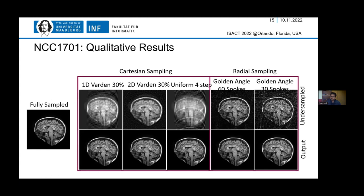Once we trained our model and tried to reconstruct, we had five different types of undersampling in the top row, each producing different types of artifacts. Using our model, we managed to reconstruct them — as seen on the bottom row. On the left we have the fully sampled ground truth image, and in every case we get stunning results compared to what we could have obtained using traditional methods.